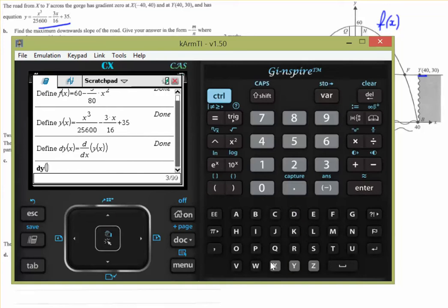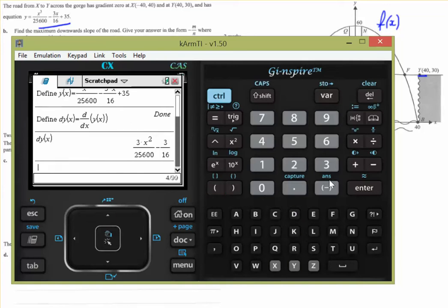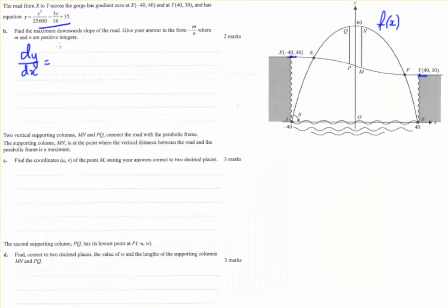Let's have a look at what that function looks like. 3x squared on 25,600, minus 3/16ths. So let's write that down. 3x squared on 25,600, minus 3/16ths. And you could have done that by hand as well.